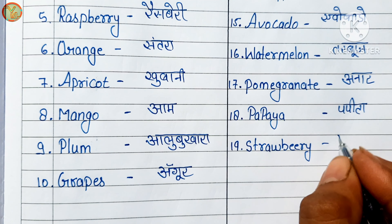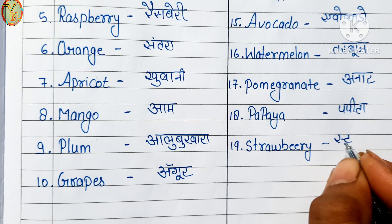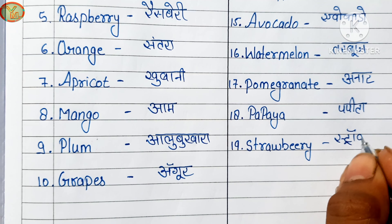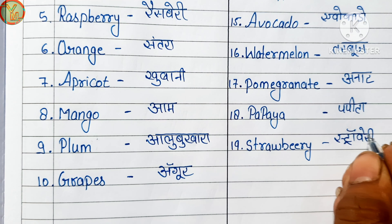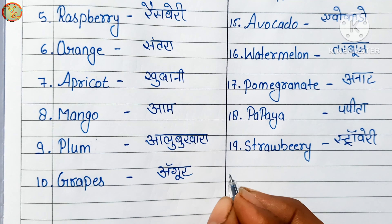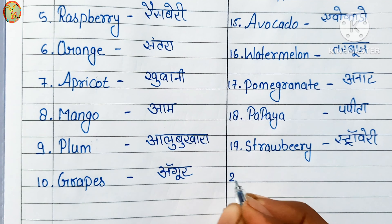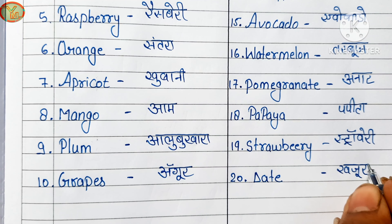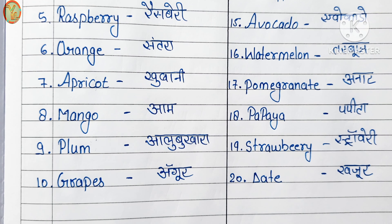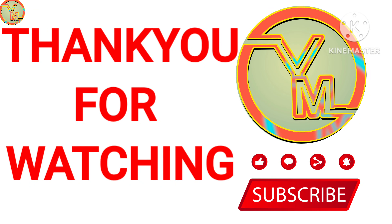Strawberry means strawberry. Twentieth number: date. Date means khajoor. Thank you.